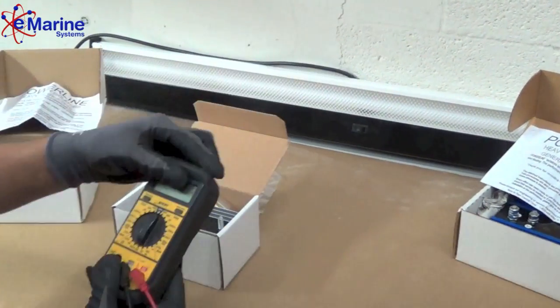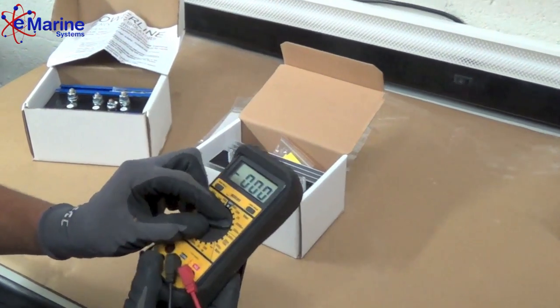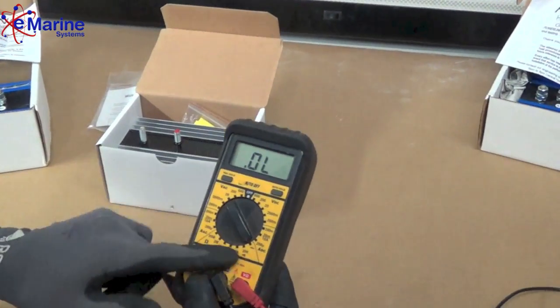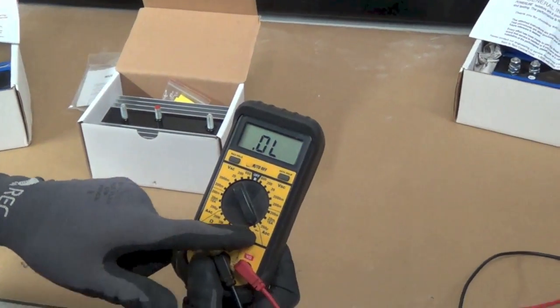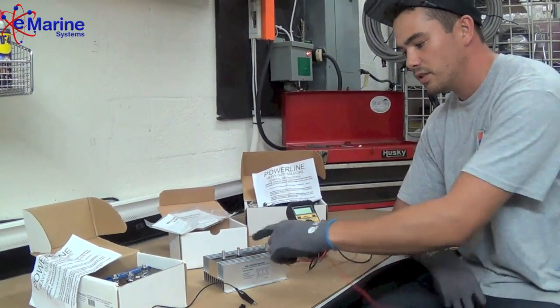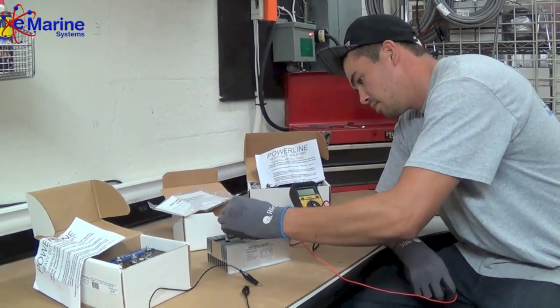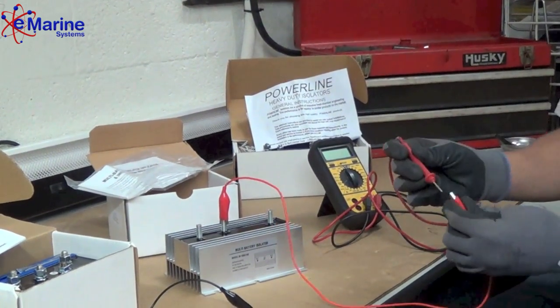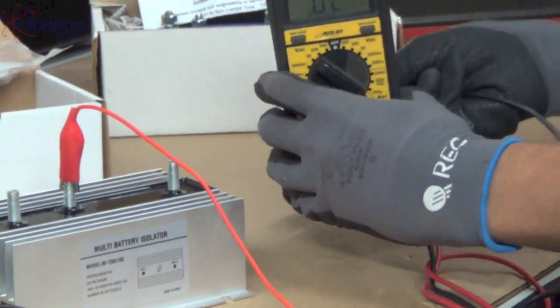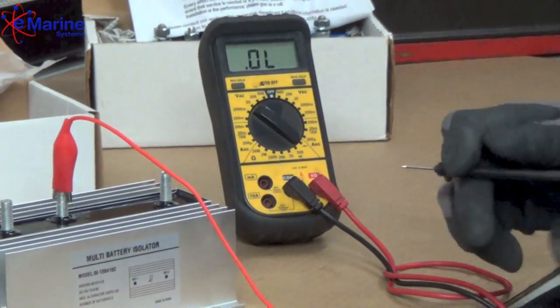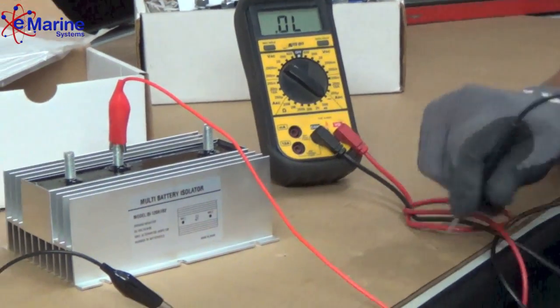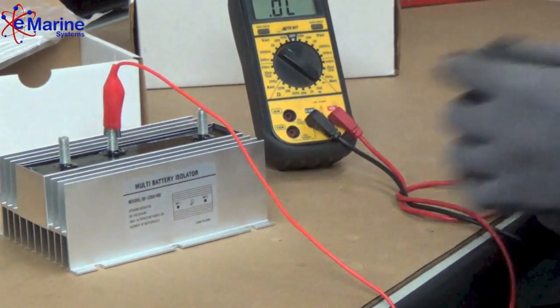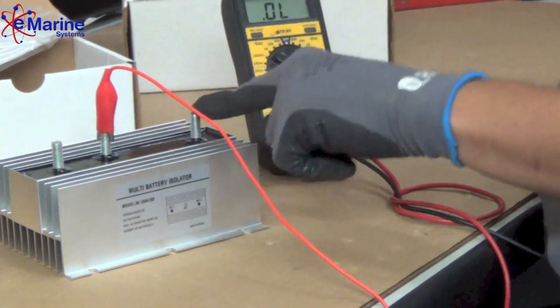So we'll take our multimeter and switch it over to the diode function, which is the arrow. We're going to take our positive lead from the alternator and connect that to our positive test probe from the multimeter. When we test the isolator, we're going from the alternator positive to the battery bank, battery bank one, battery bank two.